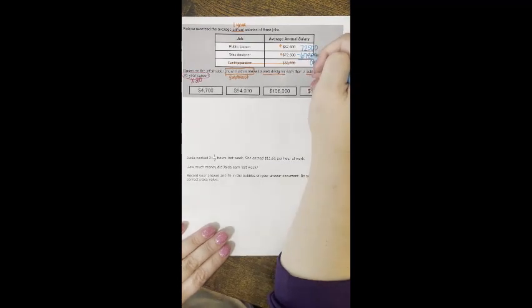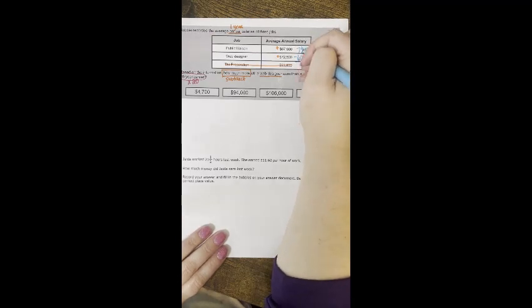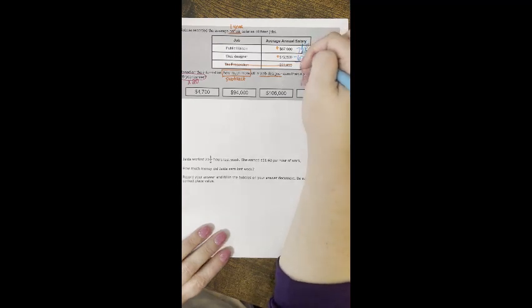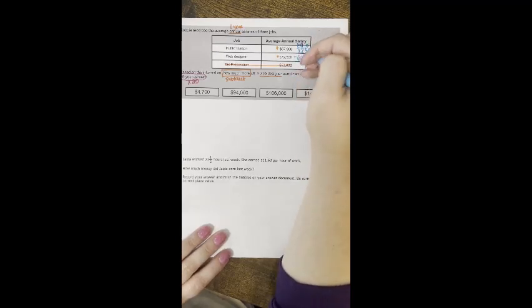Then we have $67,800 subtracting. I can't take 8 from 5, so I have to borrow. My 2 becomes a 1, my 5 becomes a 15. 15 minus 8 is 7. Again I can't take 7 from 1, so I have to borrow again. My 7 becomes a 6, my 1 becomes an 11. 11 minus 7 is 4.